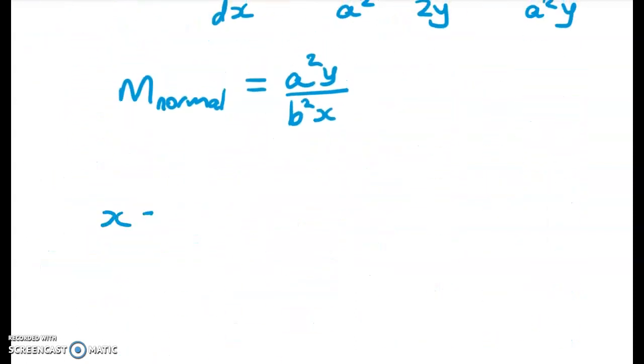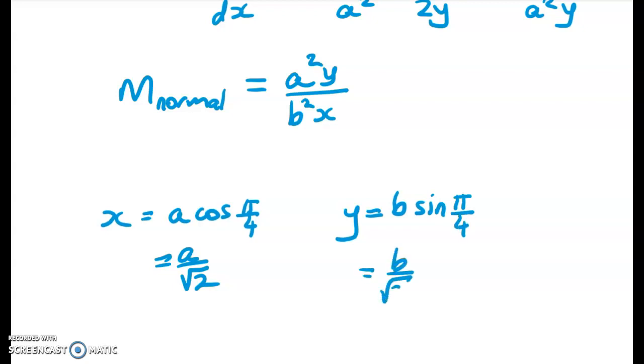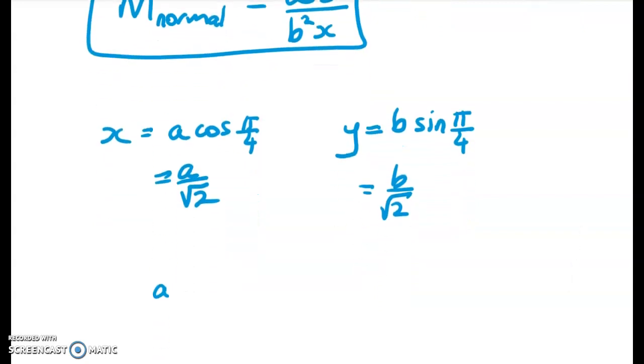So x is equal to a cos pi on 4, which is a on root 2. Really sorry about the clicking of the stylus on the screen, guys. I don't know why it's doing that. I'm sure one of you does have an idea. And if you know how to stop it happening, just send me an email. So y is equal to b over root 2. So let's put those in now and find out the normal gradient at this particular point.